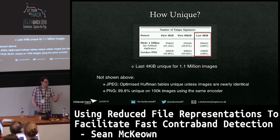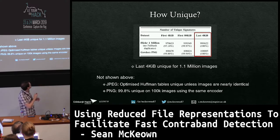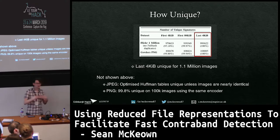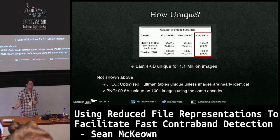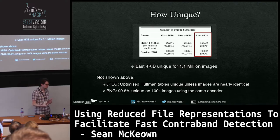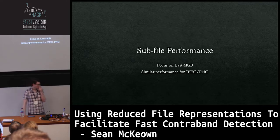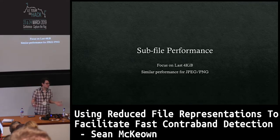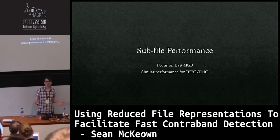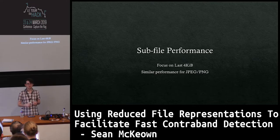How unique? Reading from the start of the file doesn't get very unique. The Flickr 1 million dataset is aptly named - about a million images. The GovDocs PNG dataset is about 108,000. Reading from the start didn't quite get to unique, but if you read the last 4KB from the end of the file, you can actually get a unique signature for 1.1 million images. We don't really need it to be any better than that - that'll do for most use cases. Although if it's 100 terabytes, you might have billions of images and that's a different conversation.